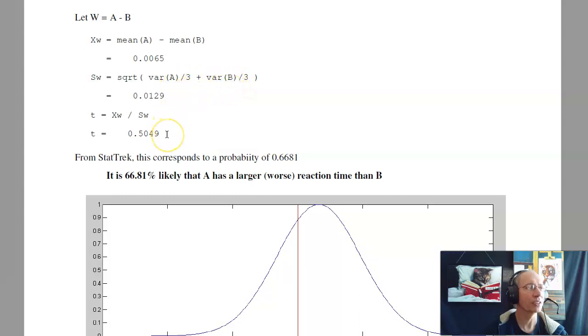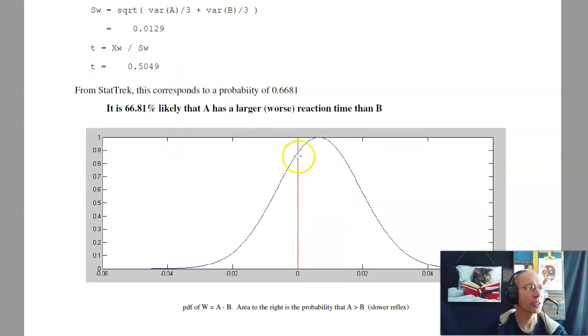The t-score is the distance to zero in terms of standard deviations. So this says that A, it's 66% likely that A has a larger, meaning worse reaction time than B. Again, the t-table or StatTrek converts the t-score to a probability. That's one way to do this problem.